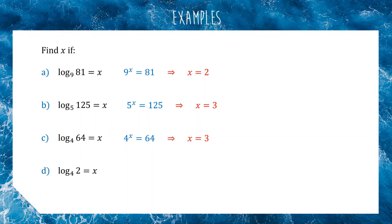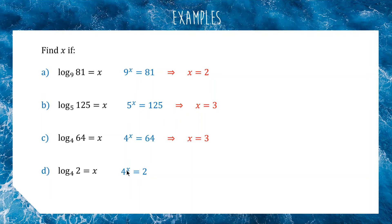For question D, it's a bit trickier. We're going to write 4 to the power of x equals 2. Now we're asking: 4 to the power of something gets you an answer of 2. Keep in mind that 2 is the square root of 4. When we do square roots as indices we use a fraction, so 4 to the power of a half gives us the square root of 4, which is 2. So x equals one half.